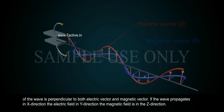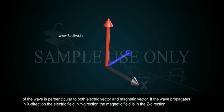If the wave propagates in x-direction, the electric field is in y-direction and the magnetic field is in the z-direction.